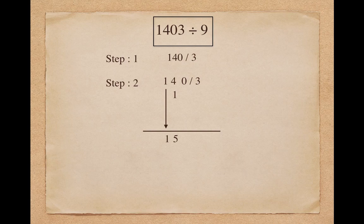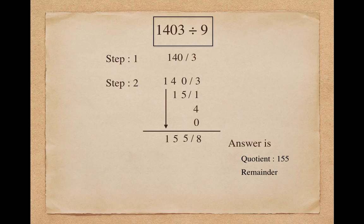To find the third digit of the quotient, I am adding all the previous digits: 1 plus 4 plus 0 makes 5. To find the remainder, make the summation of all the digits of the dividend: 3 plus 1 plus 4 plus 0 makes 8. So here the answer is quotient 155 and remainder 8.